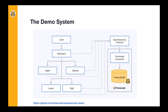Going back to the slides, this is the high-level architecture of our demo system. It's a password generator that has been over-designed as a microservices application connected to an OpenTelemetry observability stack. It has a load generator that makes requests to the generator service. Then the generator service calls the upper, lower, digit, and special services to get random uppercase, lowercase, digits, and special characters to build a password. The lower service is written in Ruby, and the rest in Python. All services have been instrumented with OpenTelemetry traces and send those traces to PromScale.